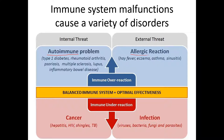Then we'll get into cancer, where your own body cells are growing out of control. Basically you want to make sure your immune system is fighting off infection but not overactive — if it's overactive you might start to fight off things you shouldn't, and if it's underactive, cancer is going to be able to spread more easily and avoid detection. This is an important balance to have.